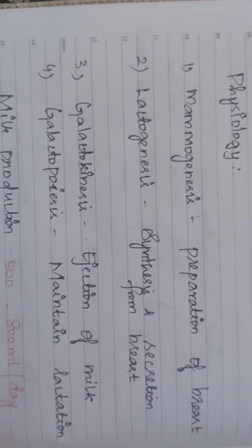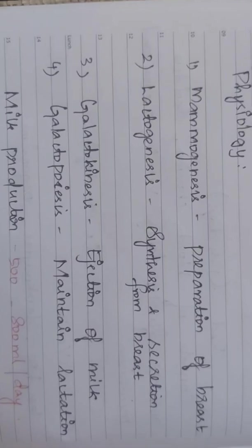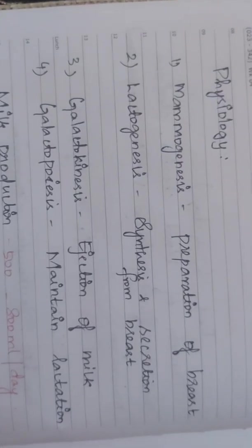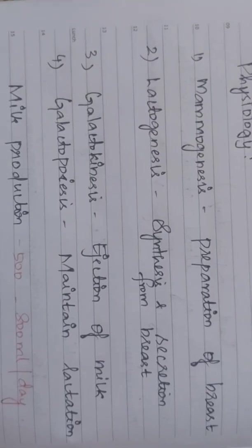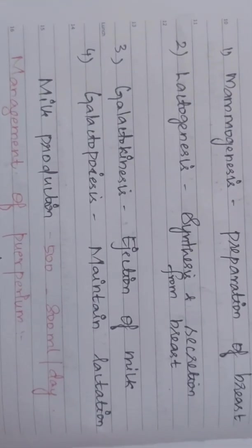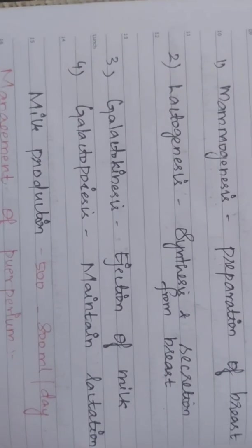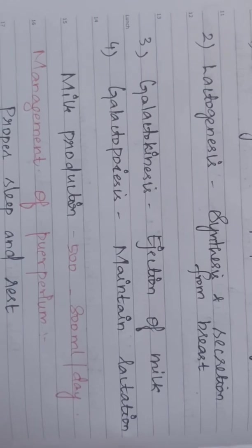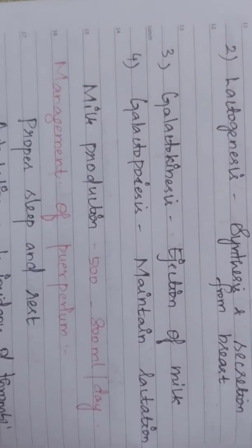Next, physiology during lactation. Lactation has four stages: mammogenesis, lactogenesis, galactokinesis for ejection of milk, and galactopoiesis for maintaining lactation. Average milk production is 500 to 800 ml per day for a healthy mother.